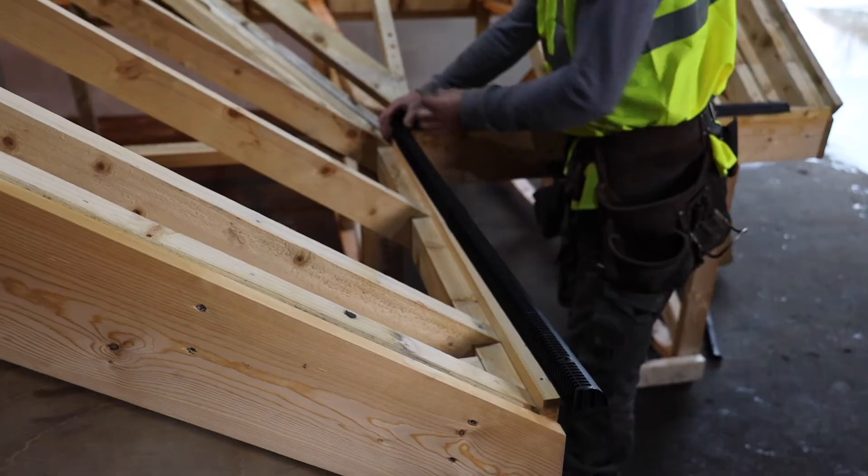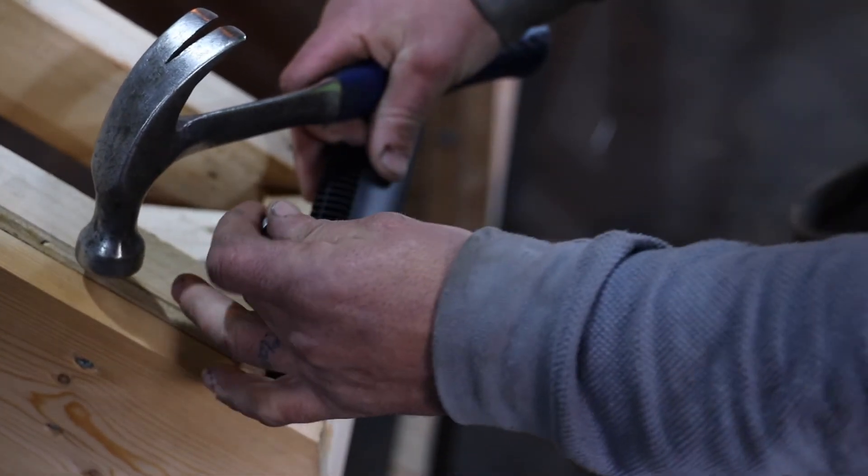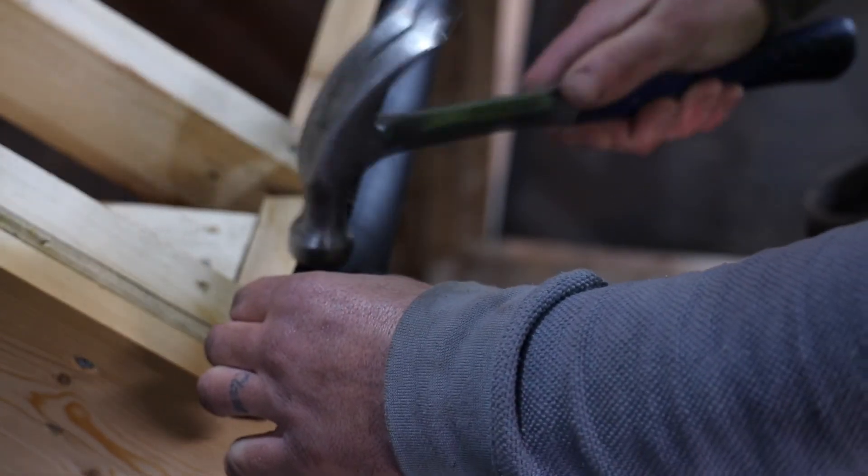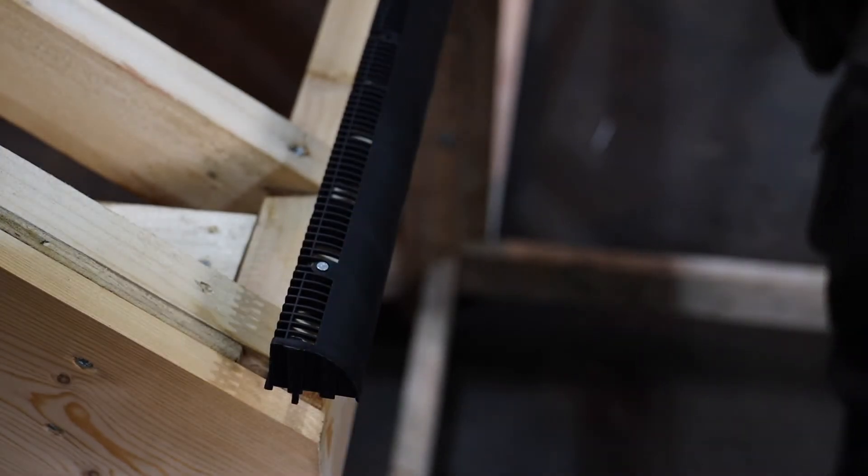When installing these products, first align the edge of the ventilator with the edge of the fascia board with the ventilator positioned directly on top of the fascia board.